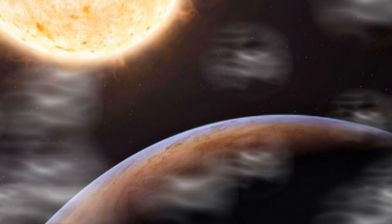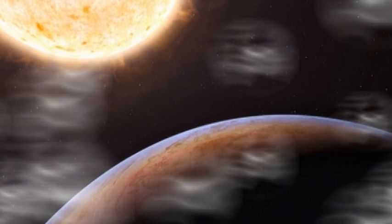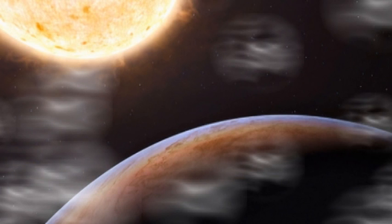HIP 13044 b stays extremely close to its parent star, which has now contracted again. The planet completes an orbit every 16.2 days and comes within about five million miles of its parent star at closest approach—just 5.5% of the distance between Earth and the Sun.